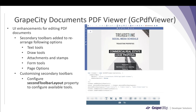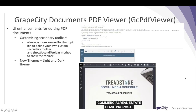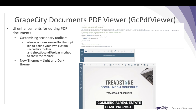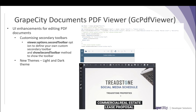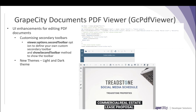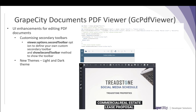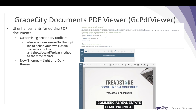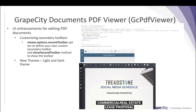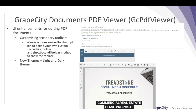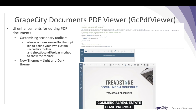We have also added the ability to customize these secondary toolbars. For example, to customize the Text Tools toolbar, you can use the secondaryToolbarLayout property to specify only the options you need. You can also define a completely custom secondary toolbar using the viewer.options.secondToolbar option. In this example, a button called 'action' is added to the secondary toolbar, which shows an alert on click. You then use the render handler of the secondaryToolbar property to render it, and call viewer.showSecondaryToolbar to display it in the viewer.